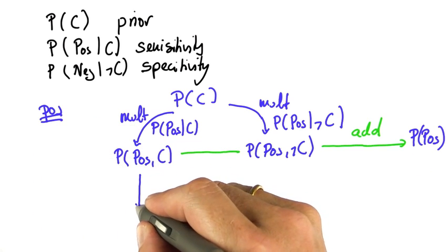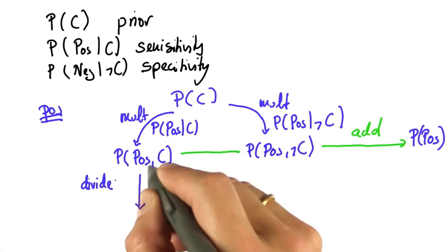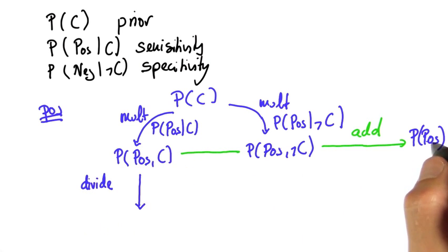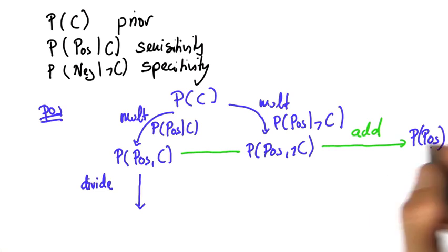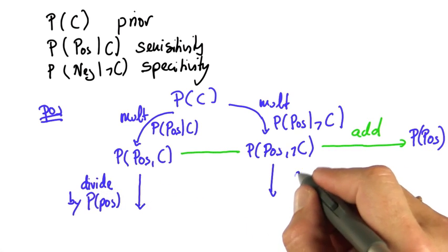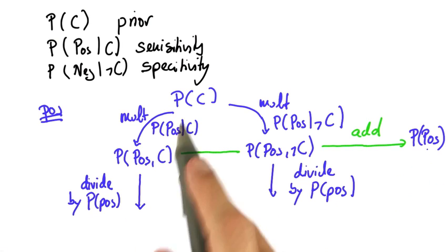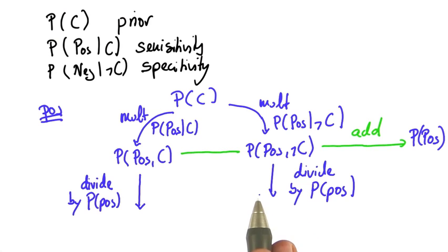All you do next is divide or normalize this by the sum, and the same on the right side. The divider is the same for both cases because this is your cancer branch, your non-cancer branch.